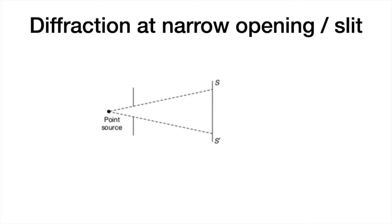Now let us look at the condition when diffraction is happening at a narrow opening or slit. Here narrow opening can take any kind of shape like square, circle, or triangle, but slit is essentially rectangular.